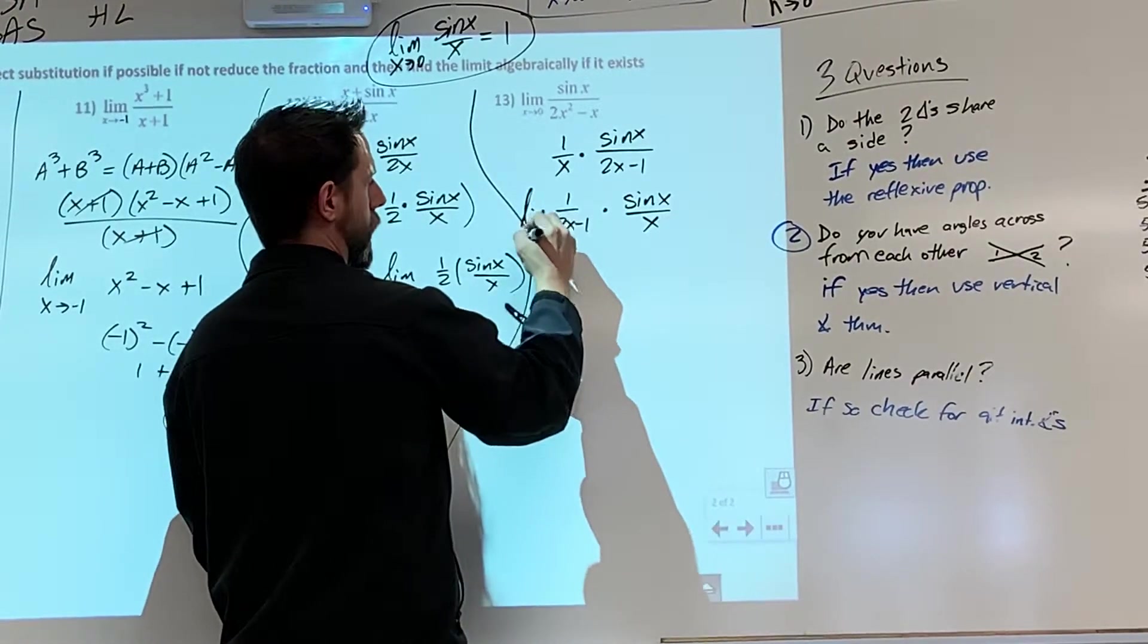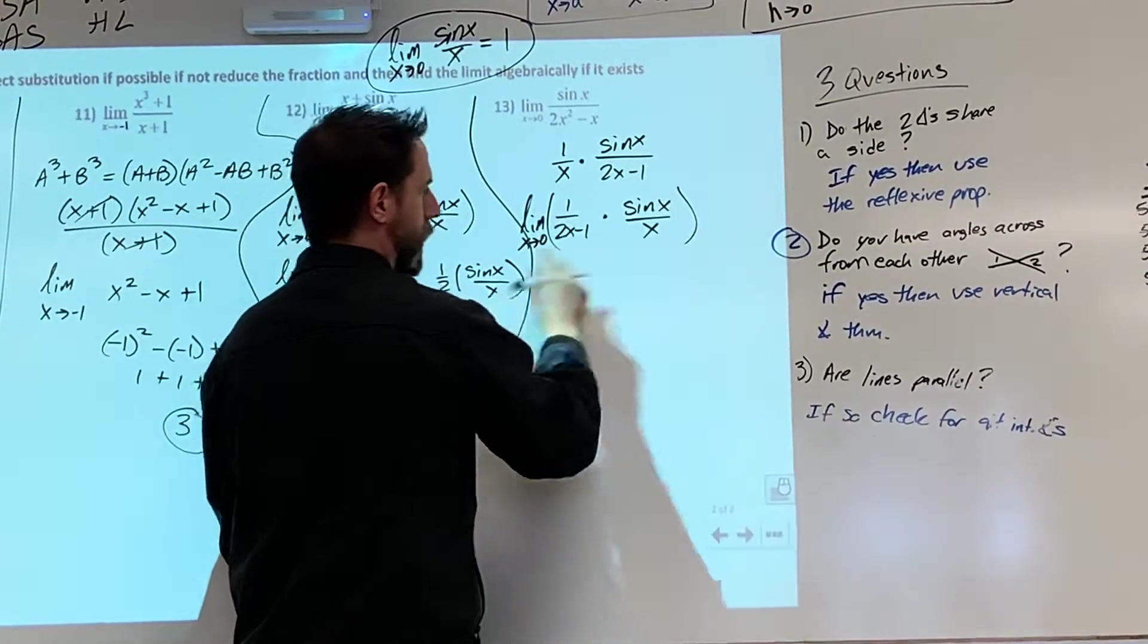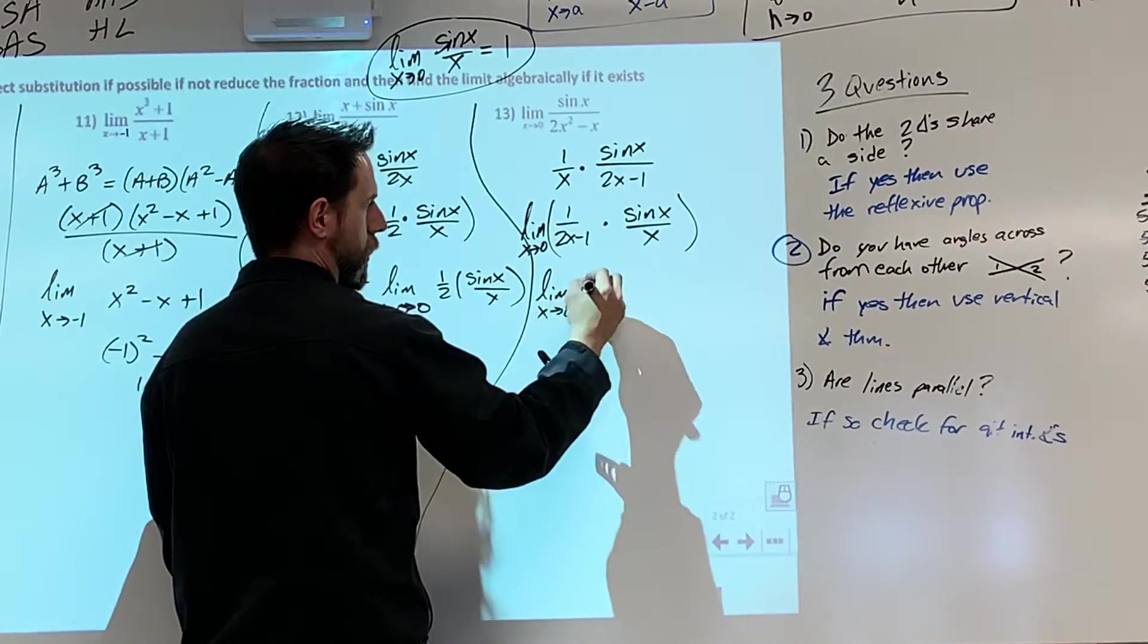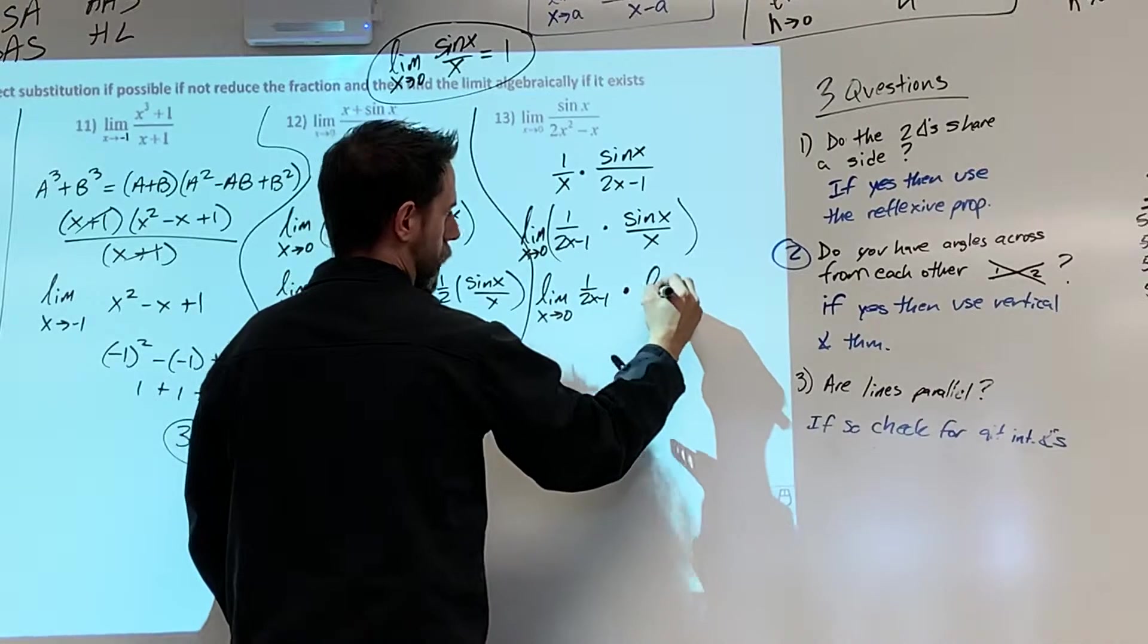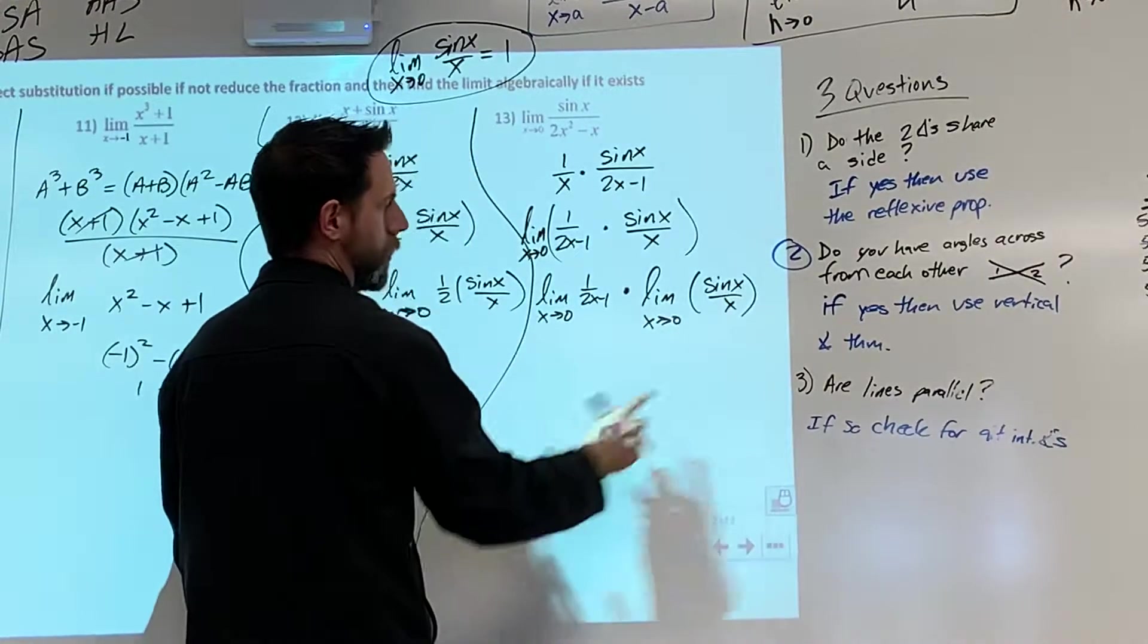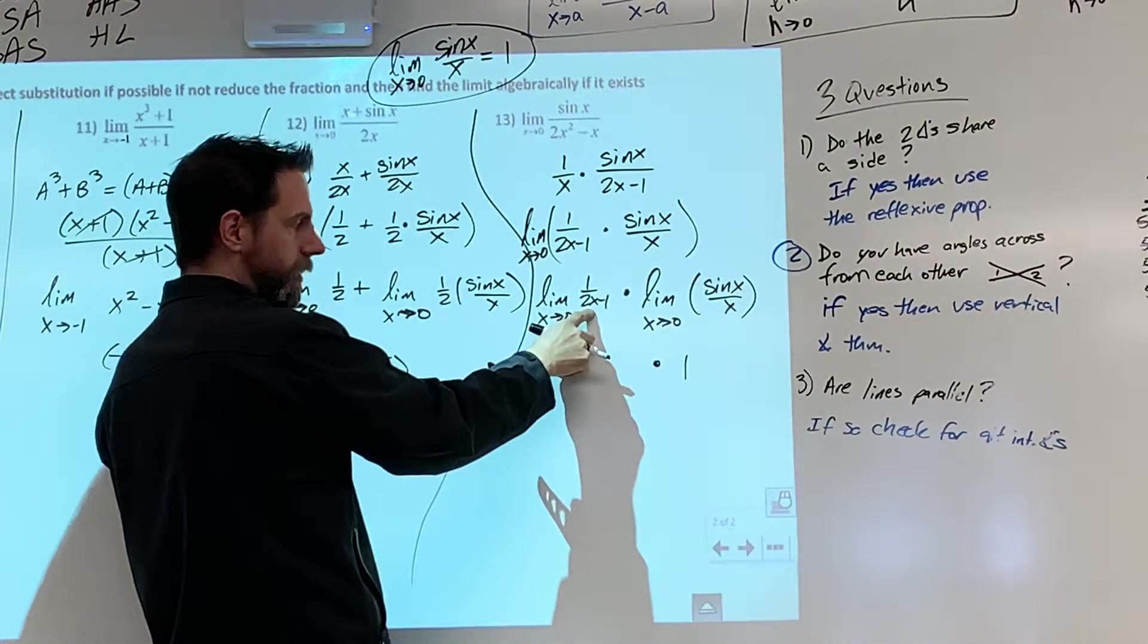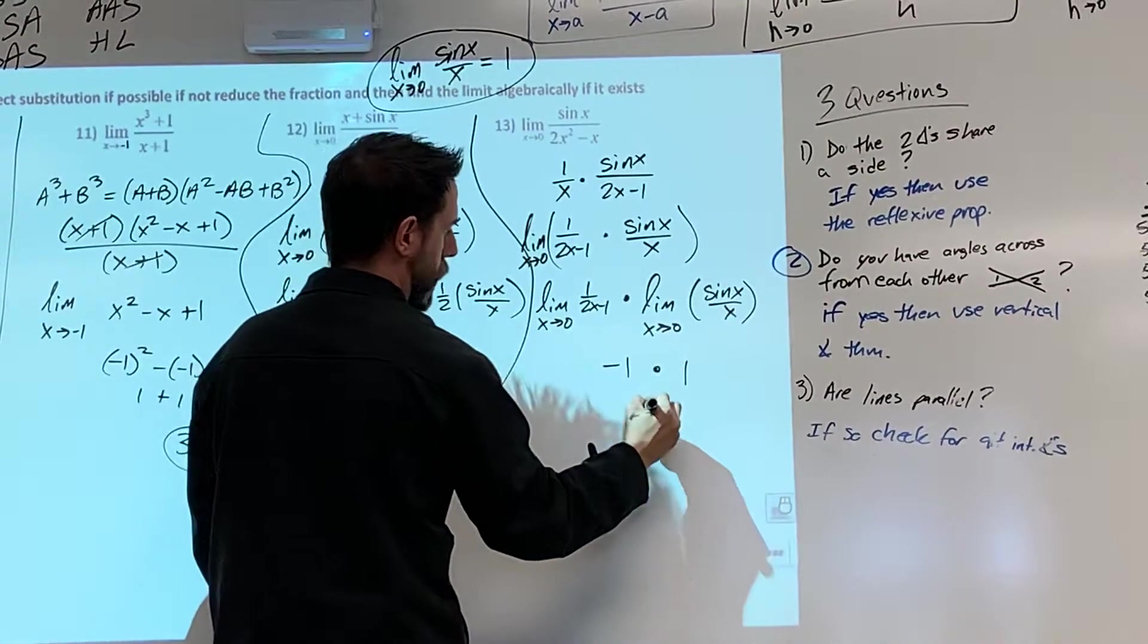And remember, this is the limit as x approaches 0. So we found out that if we have the limit as x approaches 0 of this, we really just have the limit as x approaches 0 of 1 over 2x minus 1 times the limit as x approaches 0 of sine x over x. So this is 1. So that's times 1. When I plug in the 0 in here, that's 1 divided by negative 1, which is negative 1. And negative 1 times 1 is negative 1.